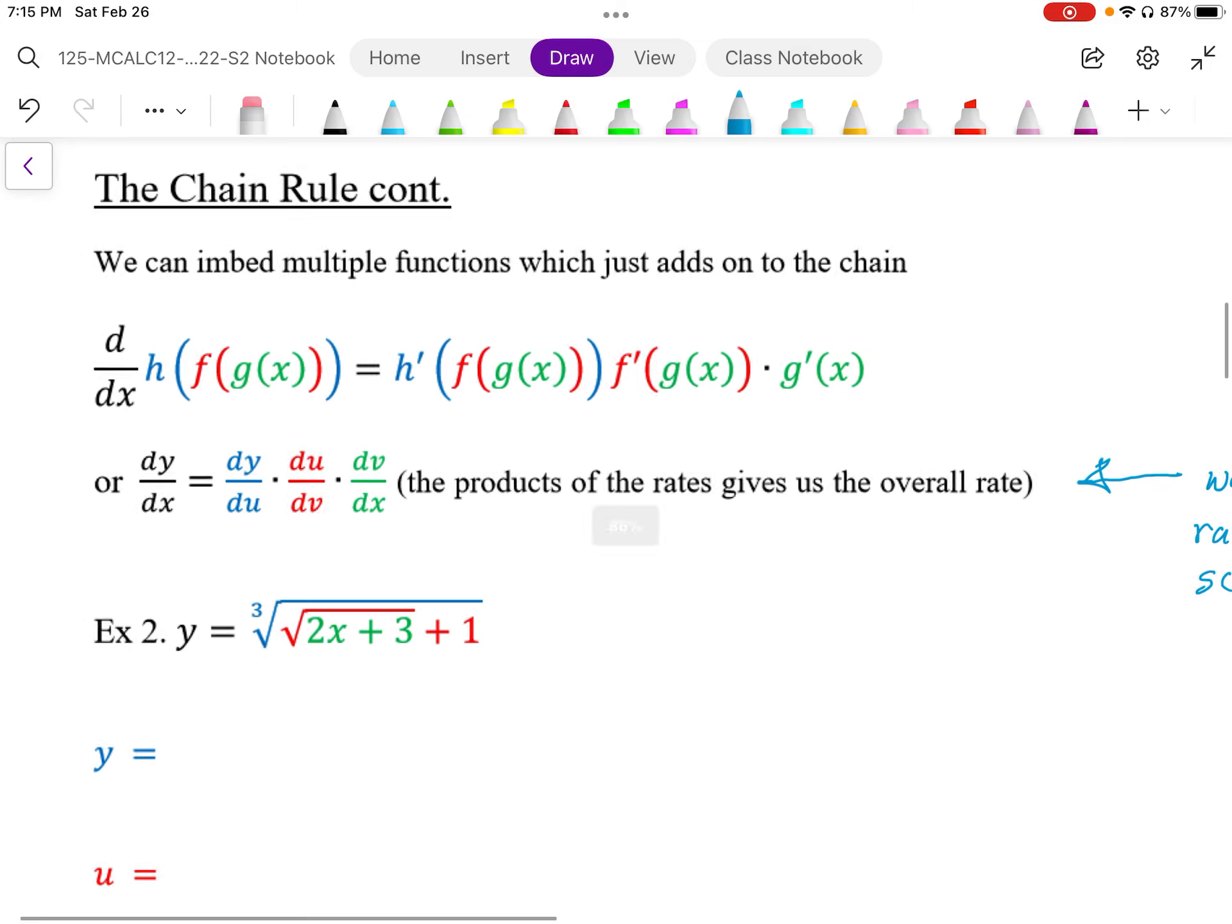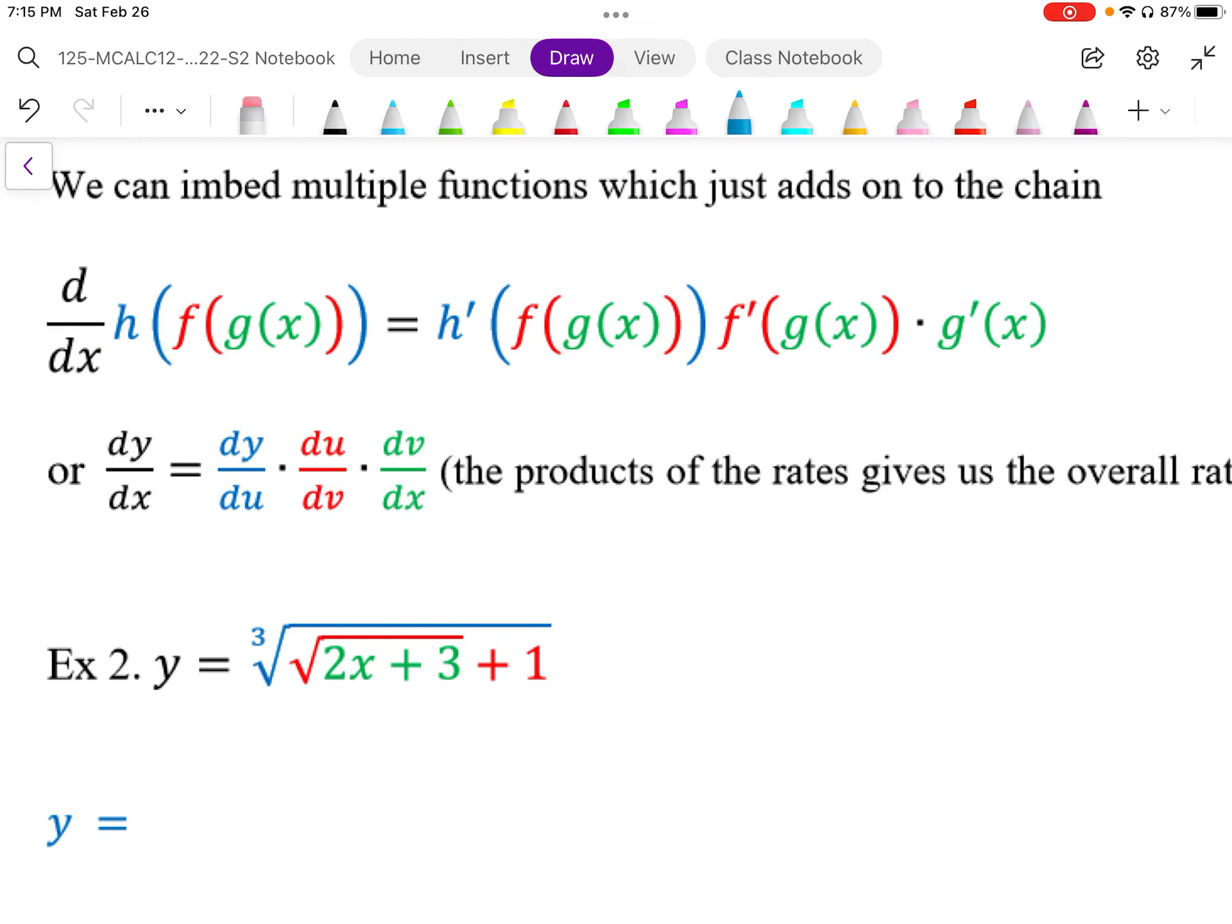If you take a look at using the dy notation, the overall rate of dy by dx is going to be equal to the outside rate. We have the outside rate as a function of the next inside function times the rate of that function with its embedded function times that function with respect to x.